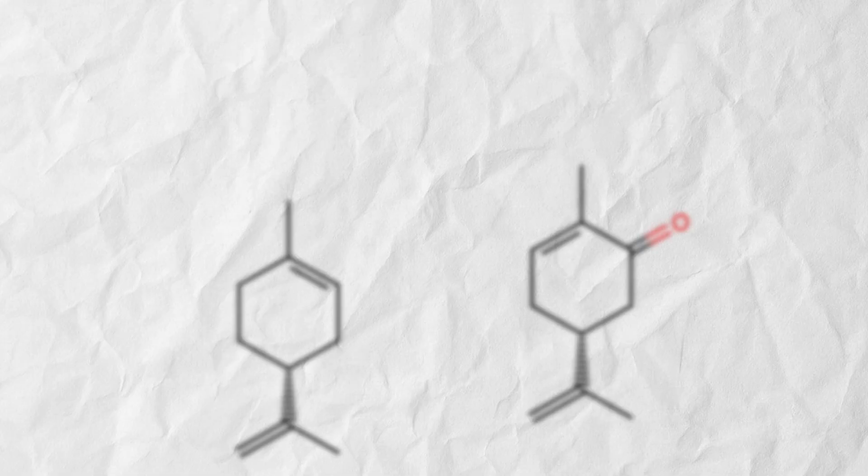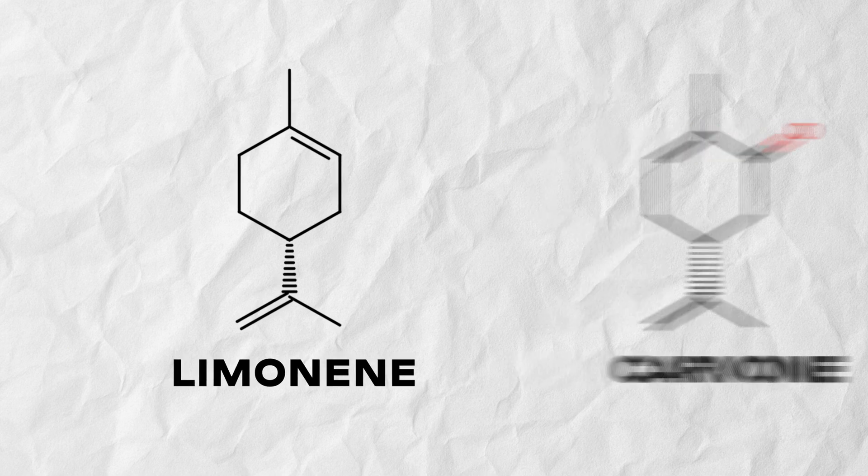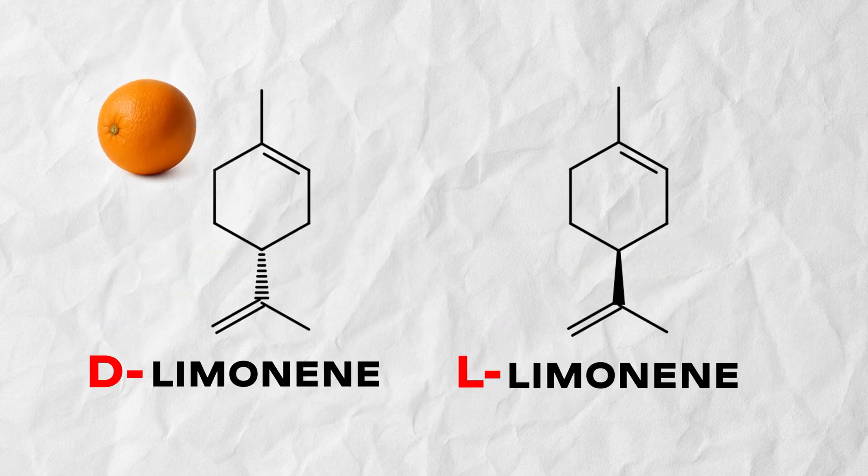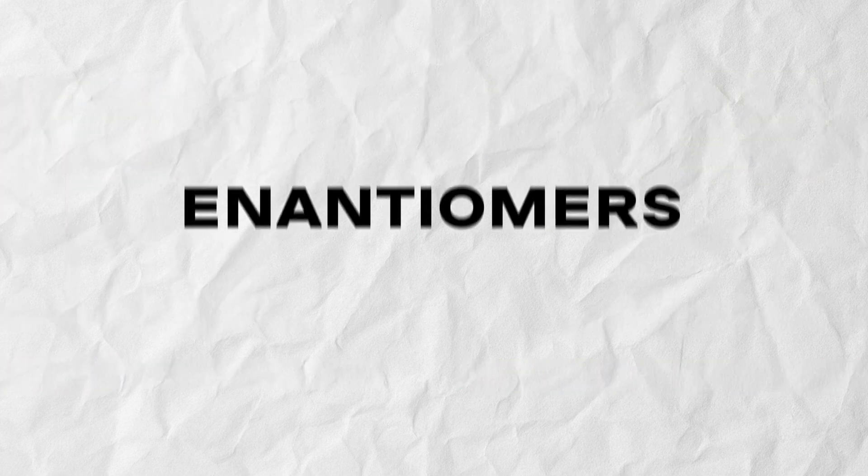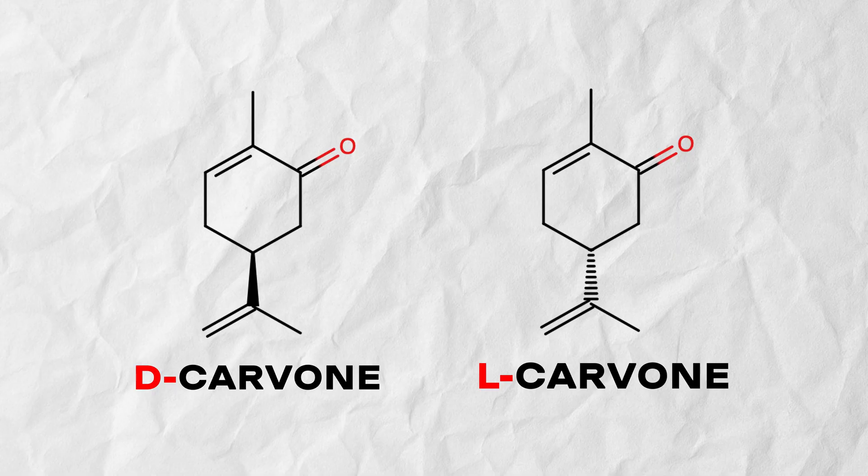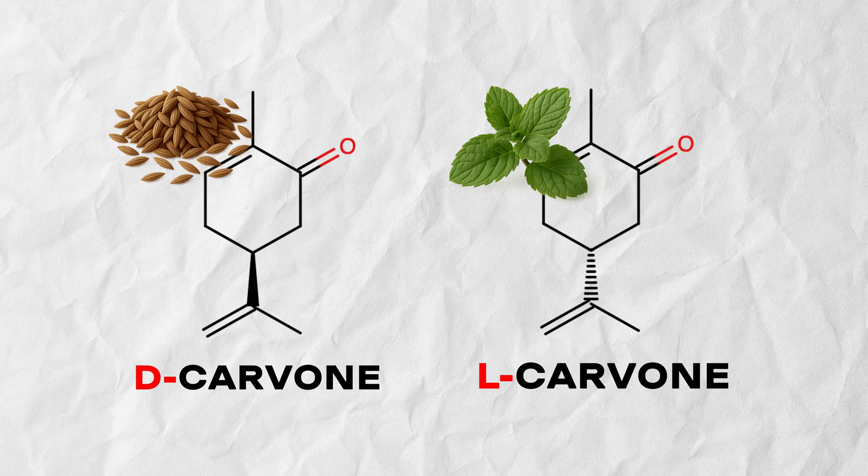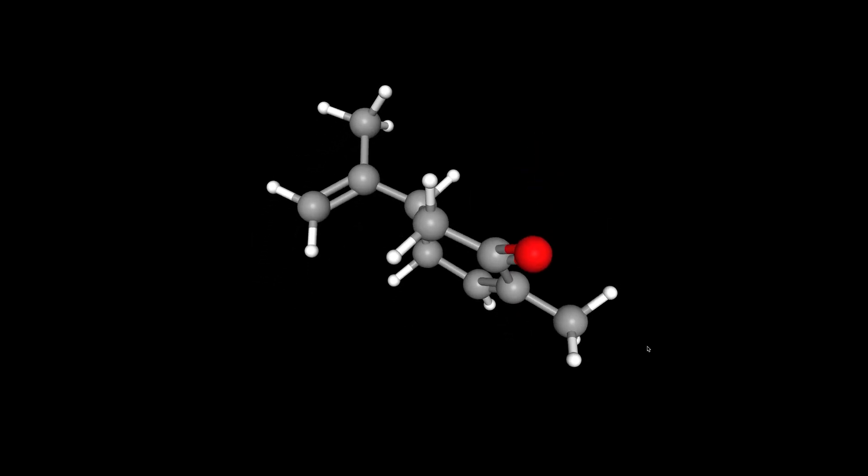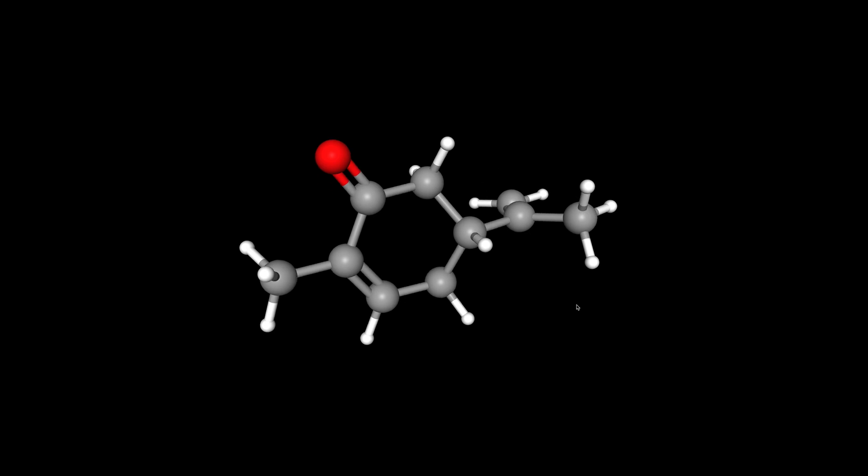Out of all terpenes, we care about two: limonene and carvone. There are two forms of limonene, D and L. One smells like orange, the other like pine. These are called enantiomers. Molecules with the same formula, but mirror images of each other. It's like your hands, left and right. They look similar, but when you place them on top of each other, they don't match. Carvone has the same story. L-carvone smells like mint, D-carvone like caraway. Can you believe that? It's the same molecule, just flipped in space. But our sense of smell easily picks up the difference.